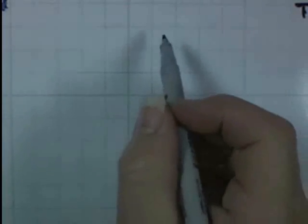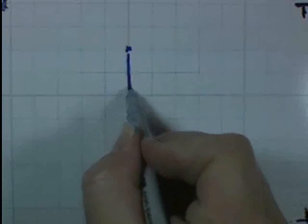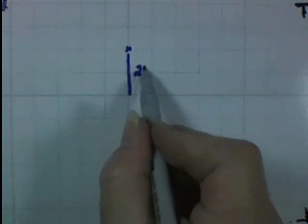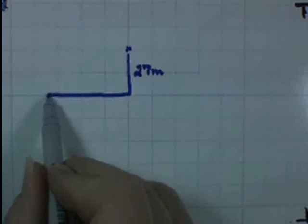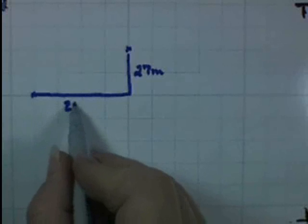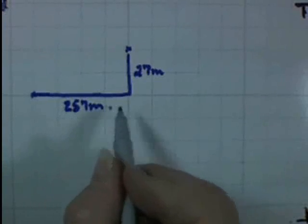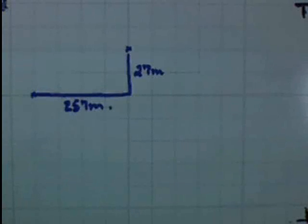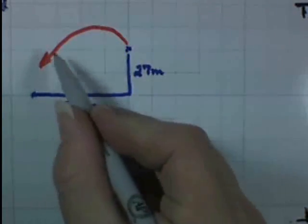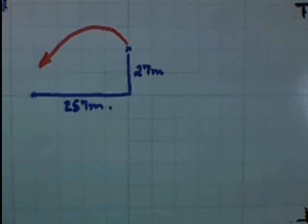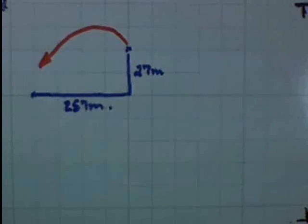Mr. Silva finds himself in an interesting position. He's elevated approximately 27 meters above the ground and located about 257 meters away from where he wants to hit the golf ball. He's going to hit the ball in a trajectory, and we want to find what velocity and angle he launches at. That's the problem.